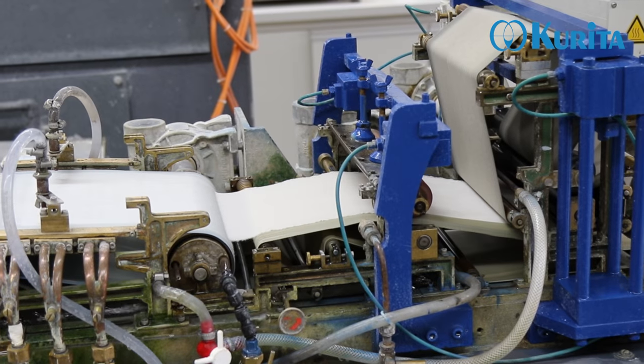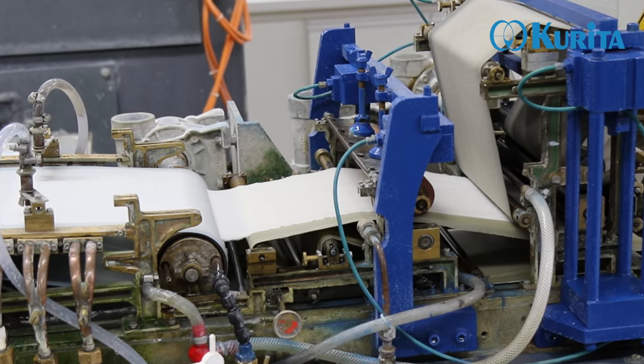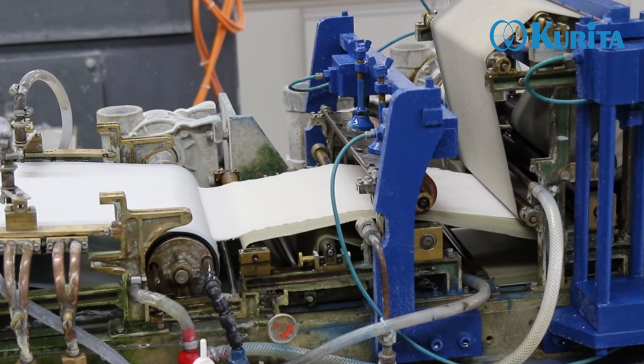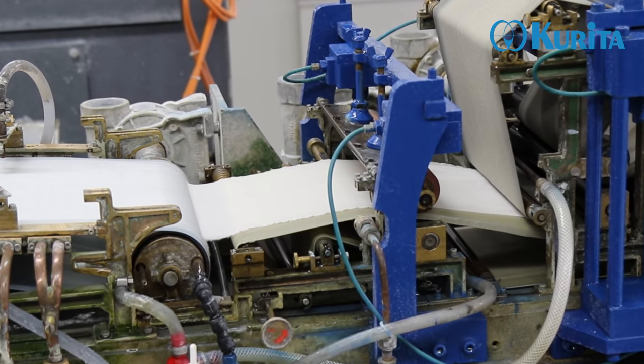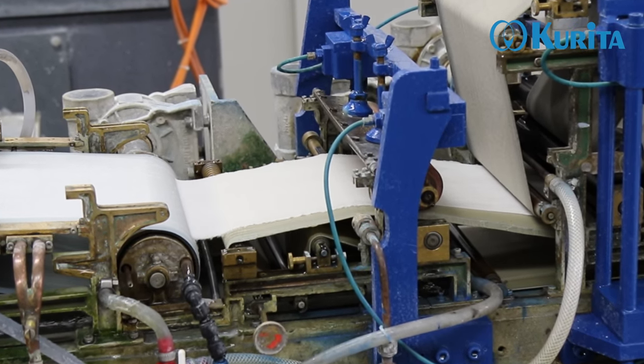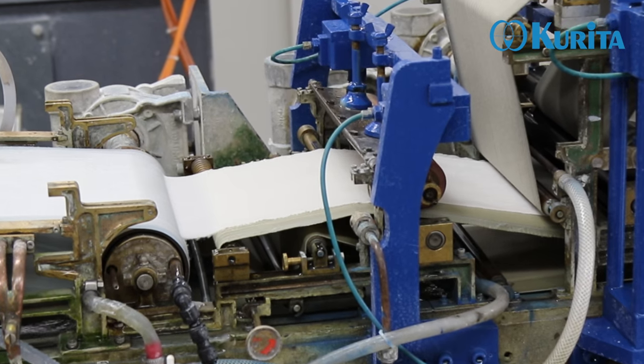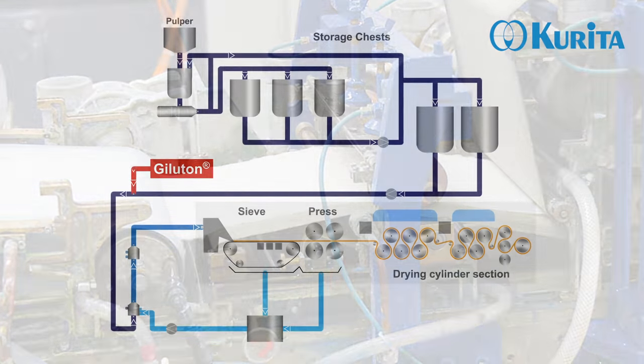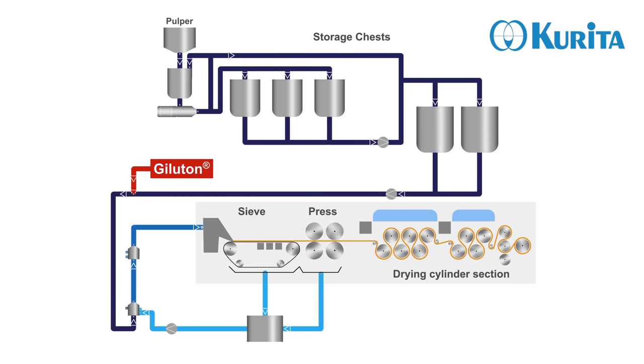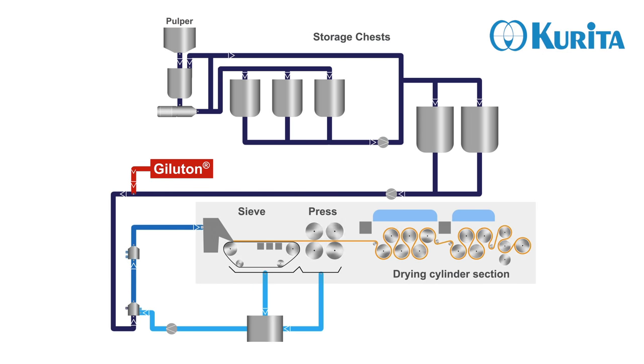The wet paper web with 70% water and 30% fiber is transferred to the press section, where further water is removed up to 50% dryness.